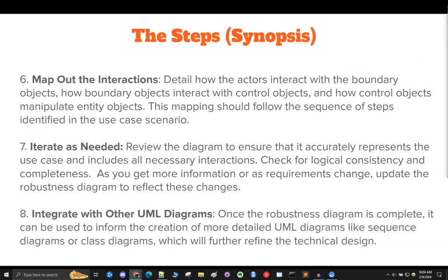Here are the last three. Number six, map out the interactions. Detail how the actors interact with the boundary objects, how boundary objects interact with control objects, and how control objects manipulate entity objects. This mapping should follow the sequence of steps identified in the use case scenario. Remember, this is a transition diagram that moves between your use cases and more advanced UML diagrams like sequence diagrams and class diagrams, so it will share a little bit of properties with both.